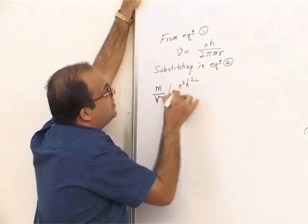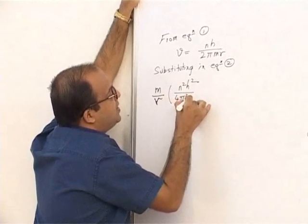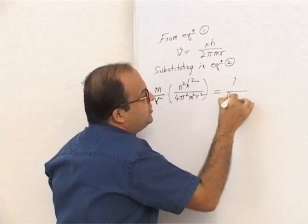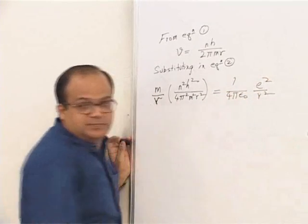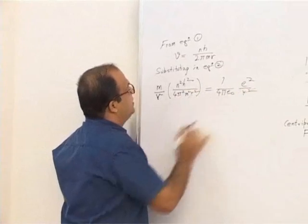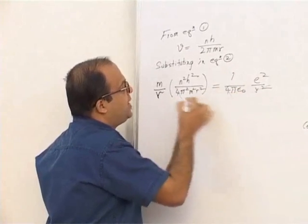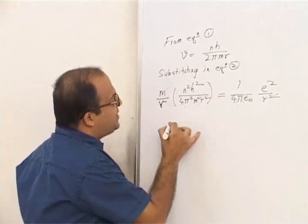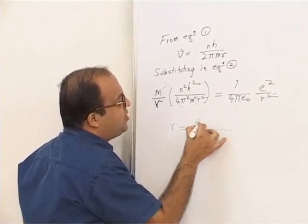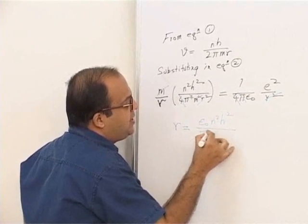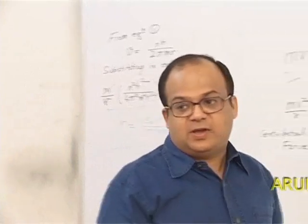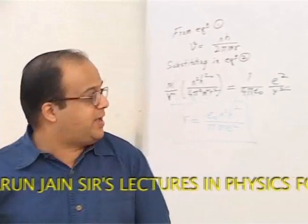Substituting, we get m/r × (nh/2πmr)² = (1/4πε₀)(e²/r²). Simplifying — cancelling r², a factor of 4, one π, and one m — we get the equation for radius: r = ε₀n²h²/πme². This is the equation for the orbital radius.